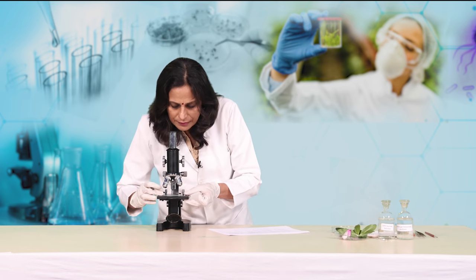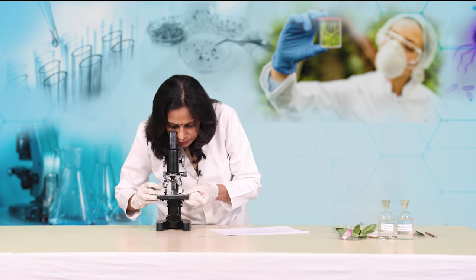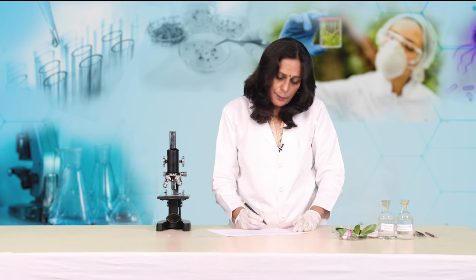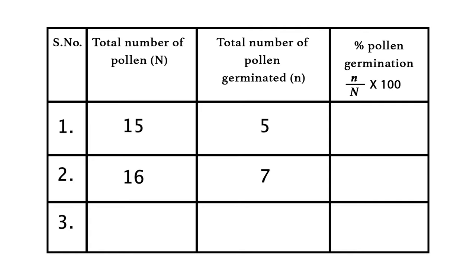In the third microscopic field, approximately the total number of pollen grains are 16 again, and the pollen grains which have germinated are 8.